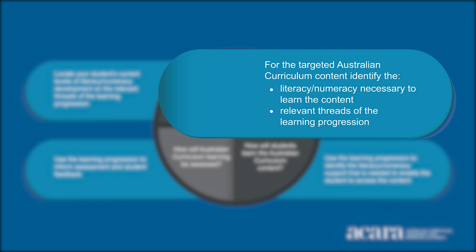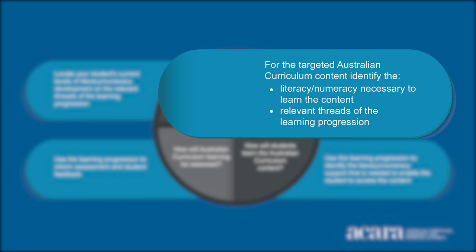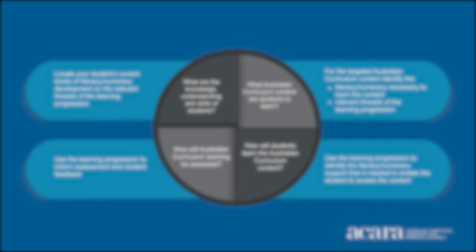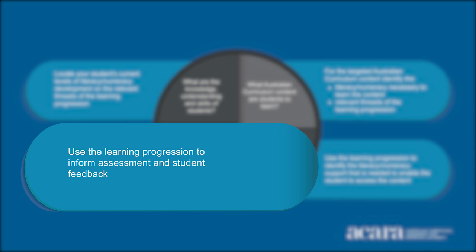What are the relevant threads of the literacy or numeracy progression? At the bottom right, depending on the particular literacy or numeracy skills required by the content, think about the literacy or numeracy support that is needed to enable each of your students to access the content. At the bottom left, when you're assessing the learning, have you been explicit about the features of the literacy or numeracy skills you expect to be demonstrated by your students? And when you've completed assessment, can you give more explicit feedback to students about how they can improve?